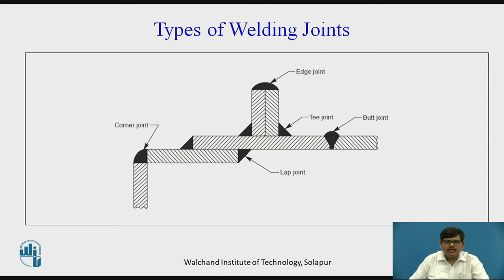The first joint we see is the corner joint. The plates are kept at 90 degrees and the remaining portion of the plate is being welded. This form of weld is called a corner joint.